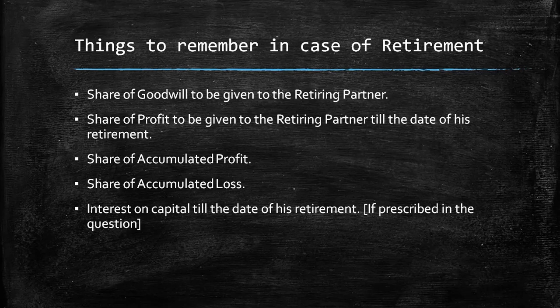The retiring partner is supposed to get his share of profit till the date of retirement. Mostly in questions, the partner is retiring at the end of the financial year, but sometimes the partner may retire after four months, six months, or nine months. In that case, the profit will be calculated and transferred to the Profit and Loss Suspense Account.